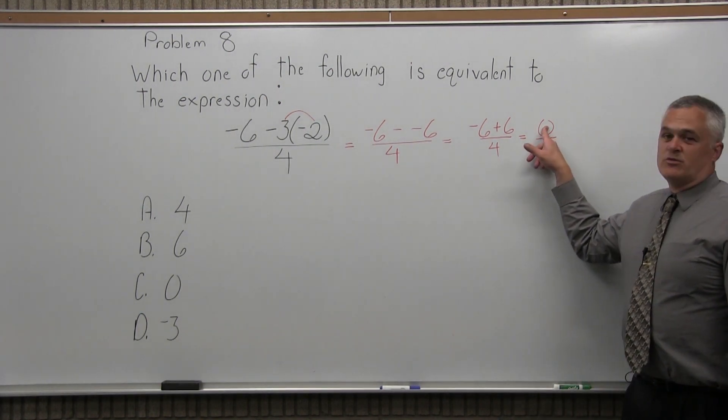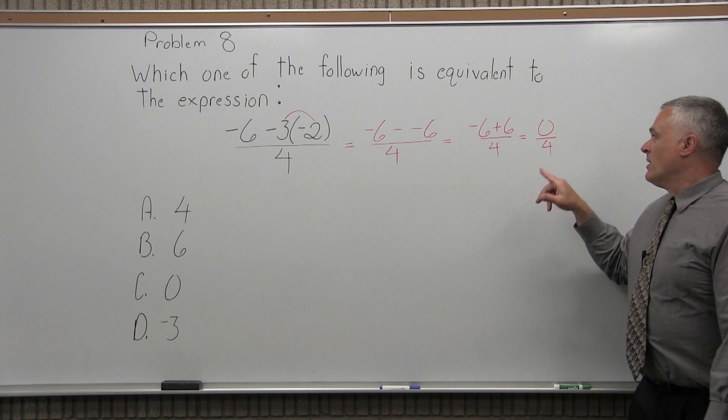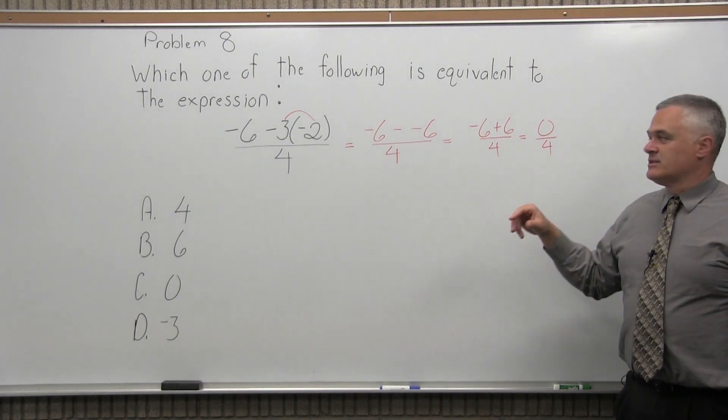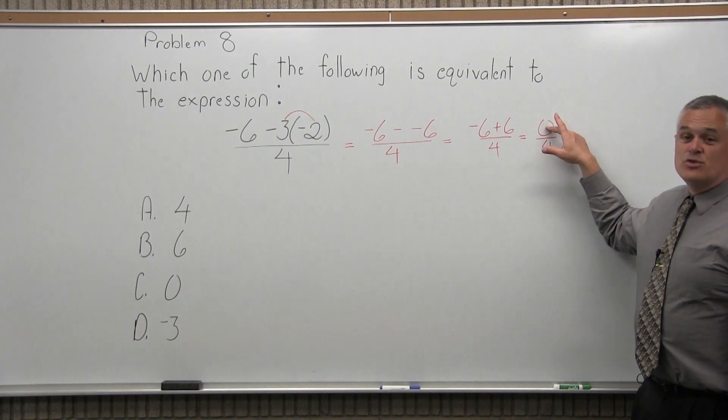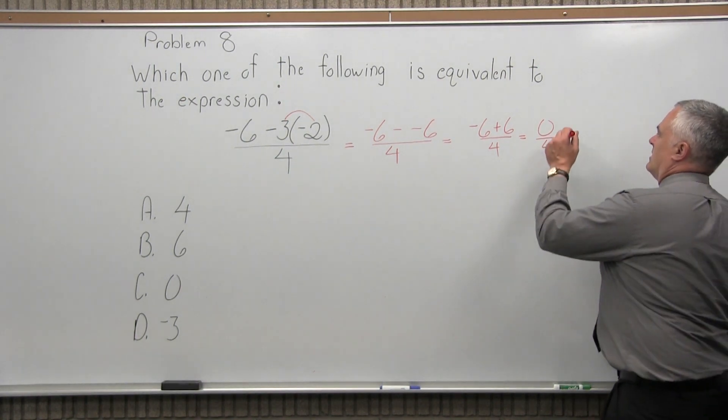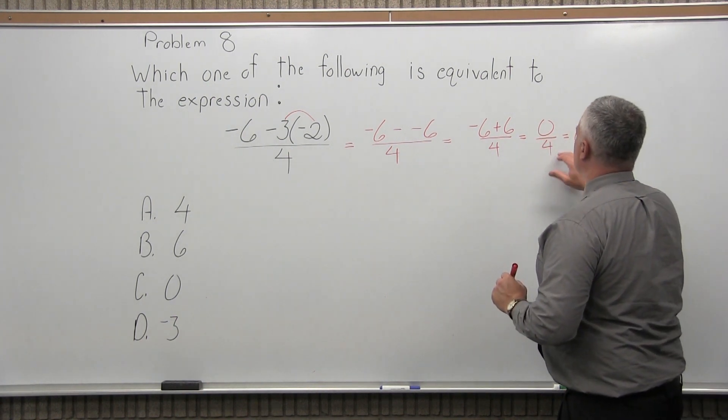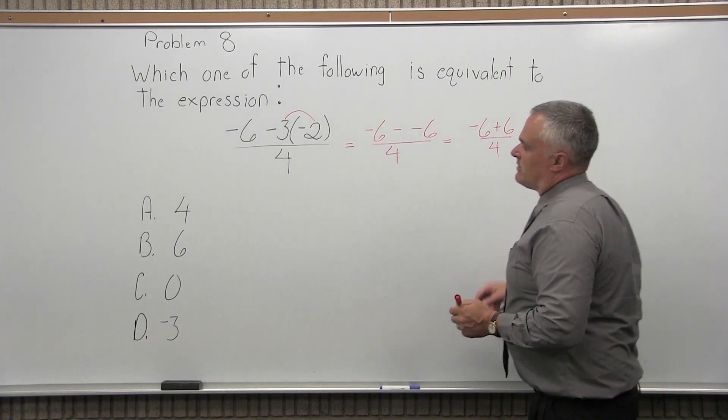Whenever you have a 0 in the numerator, the answer is just automatically 0. You cannot have a 0 in the denominator. That means an answer is undefined, and the answer does not exist. But 0 in the numerator means the answer is 0. It reduces to 0. 0 in the numerator is okay. 0 in the denominator is very bad. So 0 over 4 reduces to 0.